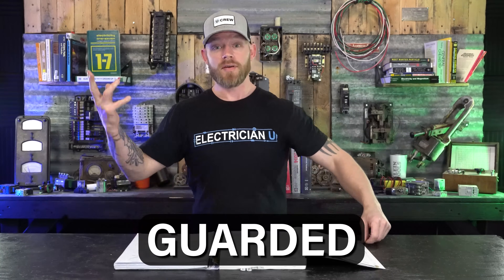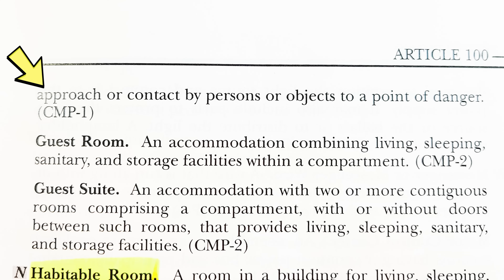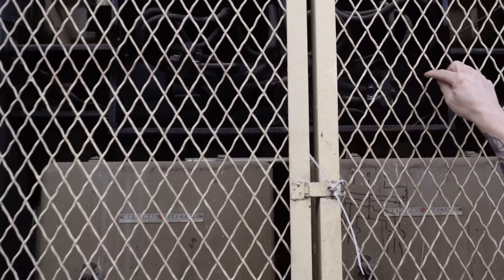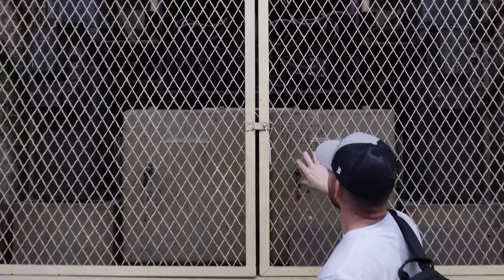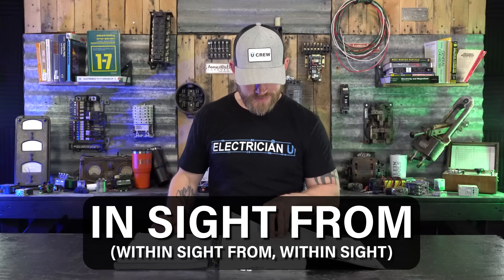Next we have 'guarded.' By code, guarded means covered, shielded, fenced, enclosed, or otherwise protected by means of suitable covers, casings, barriers, rails, screens, mats, or platforms to remove the likelihood of approach or contact by persons or objects to a point of danger. It's a similar concept to enclosing, but guarding is less fully preventative — something is being guarded rather than fully closed off.